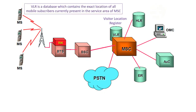The first one is VLR — Visitor Location Register. VLR is a database which contains the exact location of all mobile subscribers currently present in the service area of the MSC. If you are going from one state to another state, your entry is marked in the database of VLR.